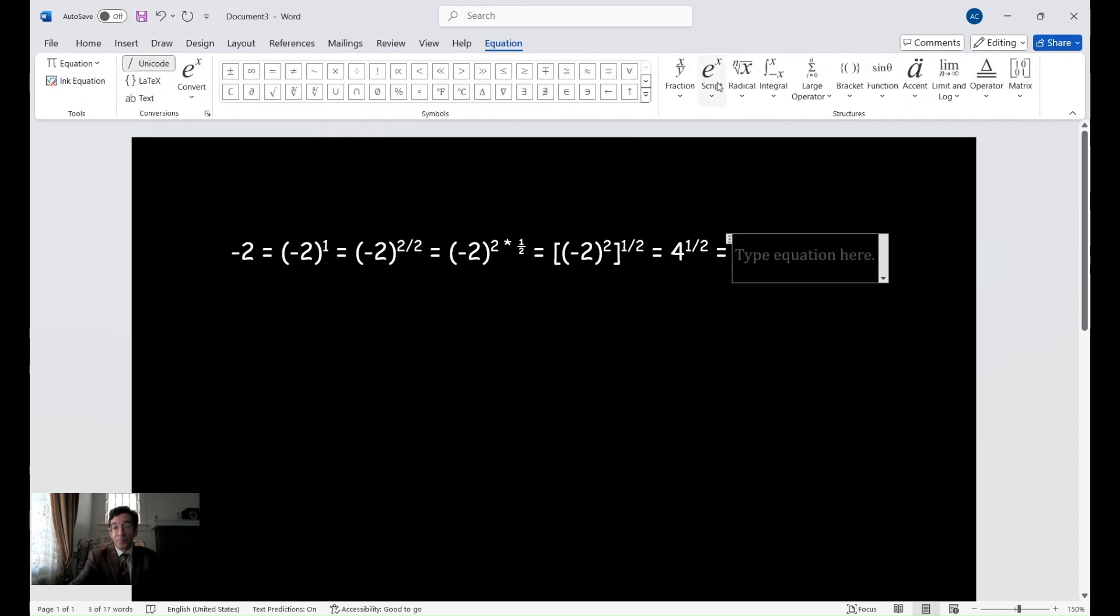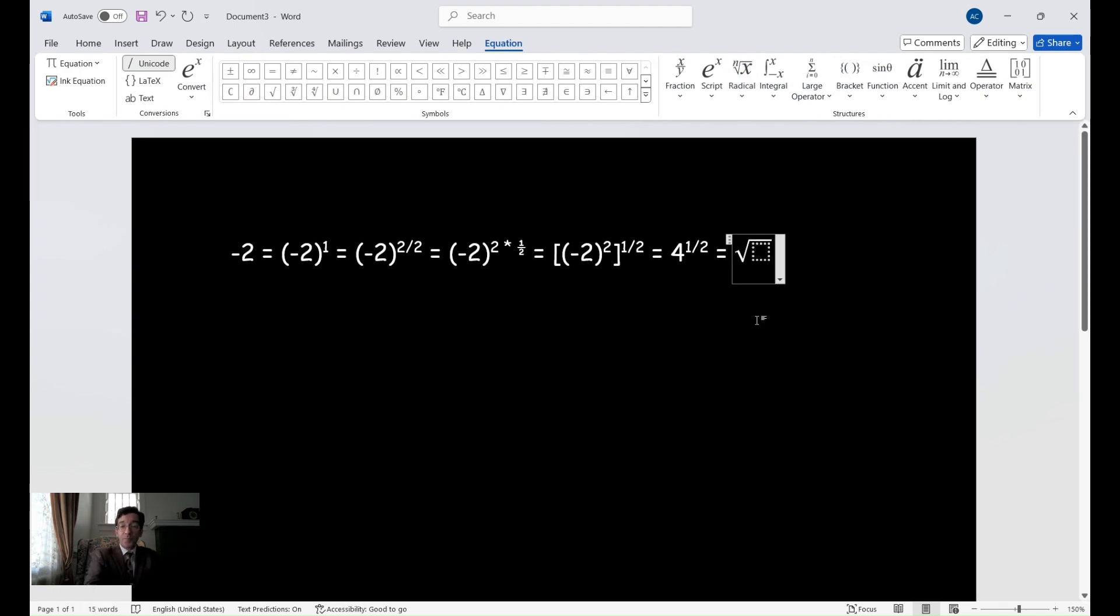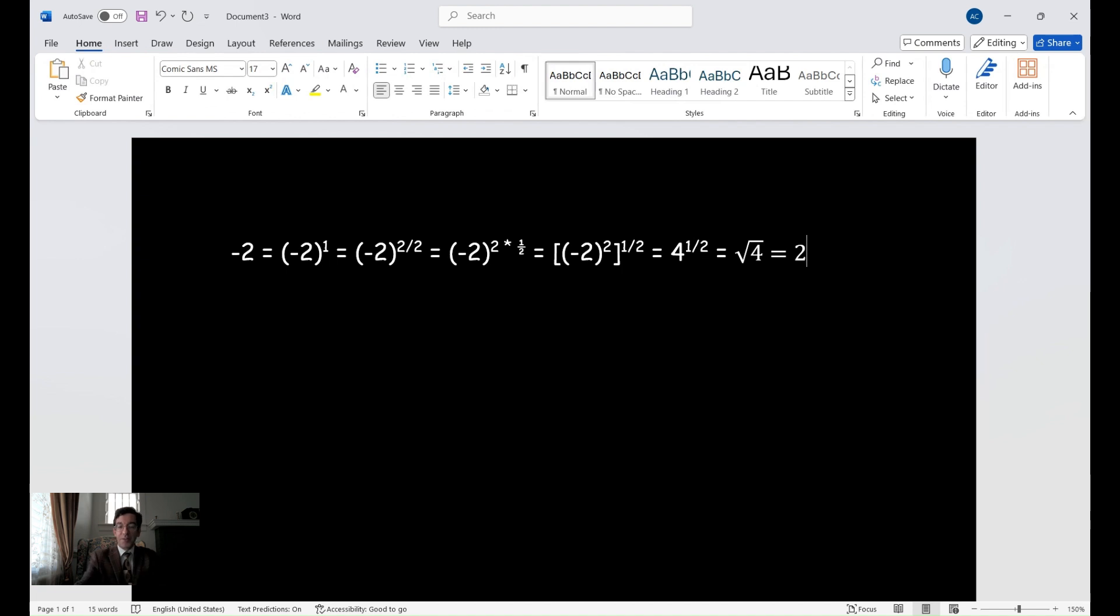So, that gives me four to the one half, and four to the one half is the same thing as saying the square root of four. You remember from your laws of radicals, when your exponent is two, you can rewrite it as the square root, when your denominator, sorry, when the denominator of your exponent is two. And then the square root of four is two. Have a careful look at this. And here's what we did. Take a moment to look at this.